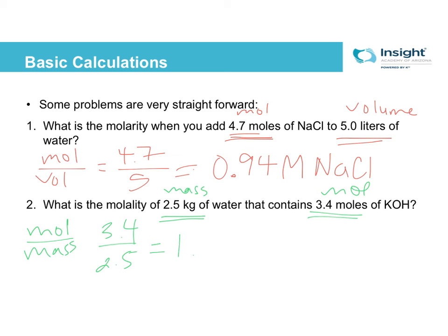So that's going to be 1.36 little m, because molality is little m. And then so that I don't think I'm giving a length, I need that KOH afterwards indicating what chemical is at this 1.36 concentration.